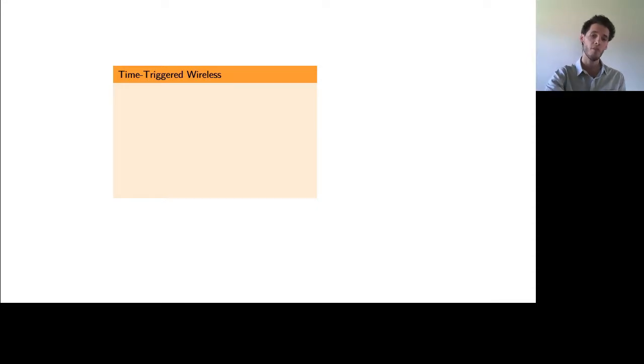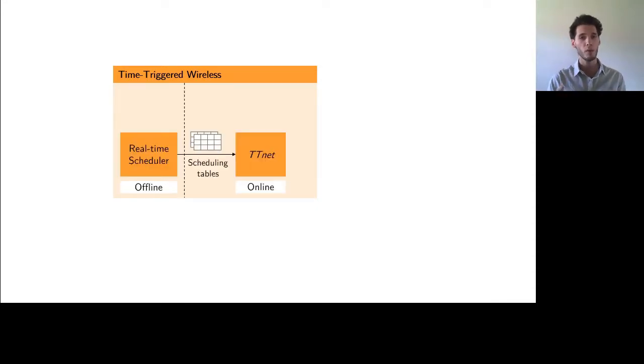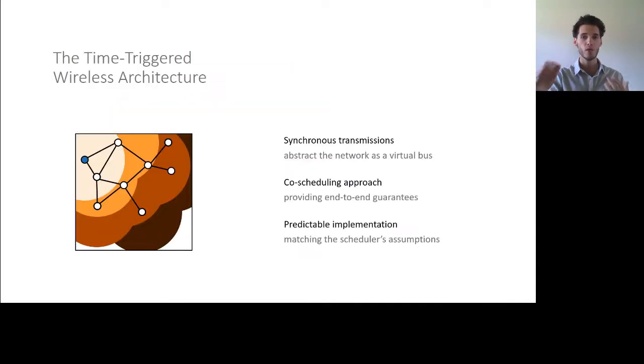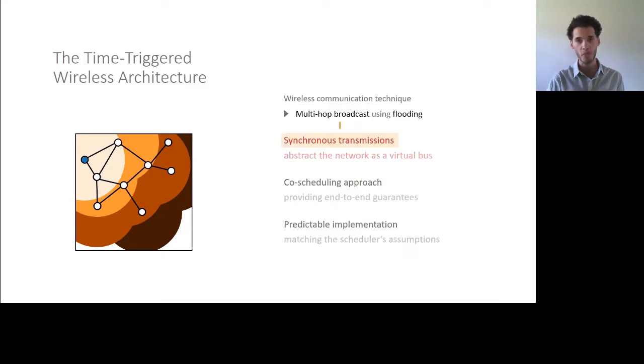TTW is a design made of essentially two main components, a real-time scheduler that provides scheduling tables, computed offline, that are being run by our network stack, which we call TTNet. About this TTNet stack, the one thing which is really key to understand is that we try to leverage a wireless communication technique, which is called synchronous transmissions.